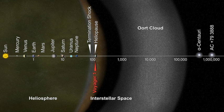The Oort cloud, named after the Dutch astronomer Jan Oort, sometimes called the Opik–Oort cloud, is a hypothetical cloud of predominantly icy planetesimals proposed to surround the Sun at distances ranging from 2,000 to 200,000 AU.